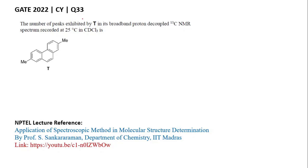Welcome to GATE preparation. Today we will solve question number 33 from GATE 2022. The question asks for the number of peaks exhibited by compound T in its broadband proton-decoupled 13C NMR spectrum recorded at 25 degrees centigrade in CDCl3. Here we have to determine the number of peaks that will appear in the 13C NMR spectrum of this compound.